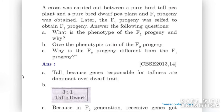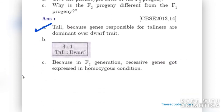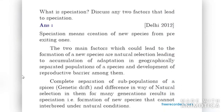A cross was carried out between a pure breed tall pea plant and a pure breed dwarf pea plant. The F1 progeny has all tall plants because genes responsible for tallness are dominant over the dwarf trait. The phenotypic ratio of F2 progeny is 3:1 — three tall and one dwarf. F2 differs from F1 because in F2 generation the recessive genes got expressed in homozygous condition, giving us one dwarf plant.